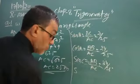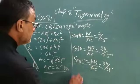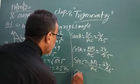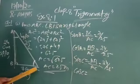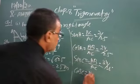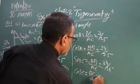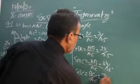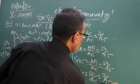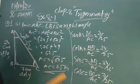Now, cos C. Cos C means adjacent. Adjacent means BC upon AC. BC means 7 upon AC means 25. Correct? So this is question number 1.